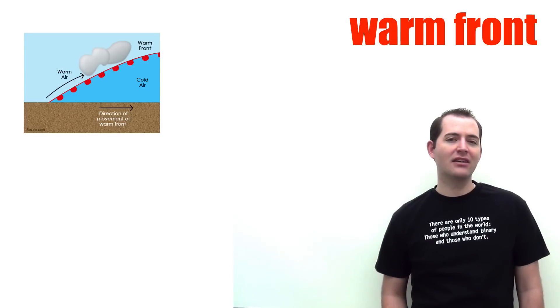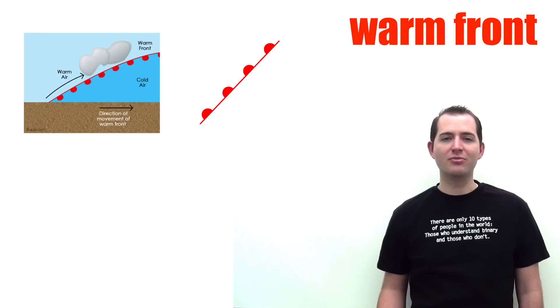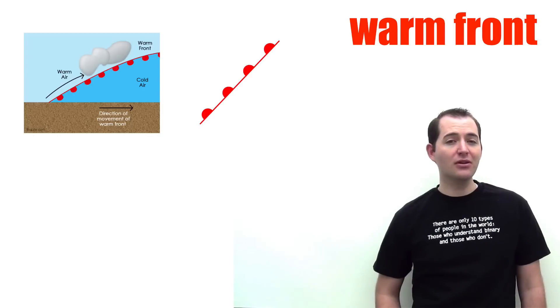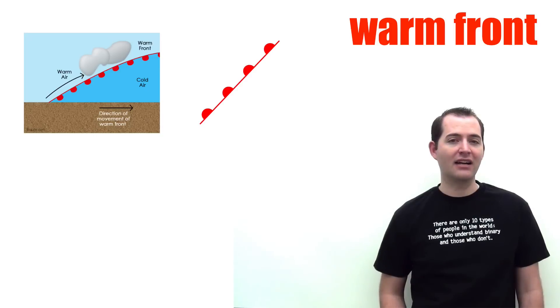A warm front is represented on a weather map with a red line with red semi-circles pointing in the direction of movement or into the cold air. Warm fronts move more slowly than cold fronts and they lead to a slow gradual rising of the air.